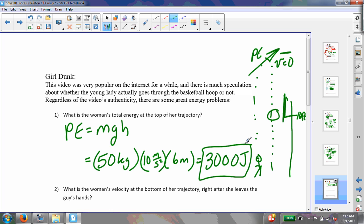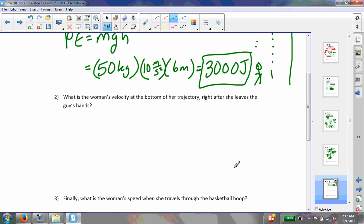So all throughout her trajectory, she has an energy of 3,000 joules. Now I want to know what is her velocity at the bottom of the trajectory, right after she leaves the guy's hands. Now I know also that at the bottom, that she has a kinetic energy equal to 3,000 joules. In fact, she has that number all throughout her trajectory. She always has 3,000 joules of energy. Because at the bottom, I know that h equals zero, and potential energy is also equal to zero.